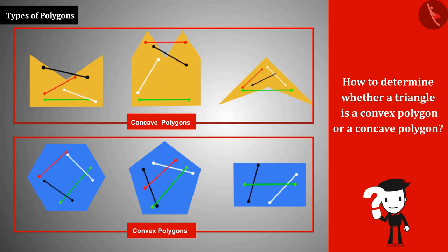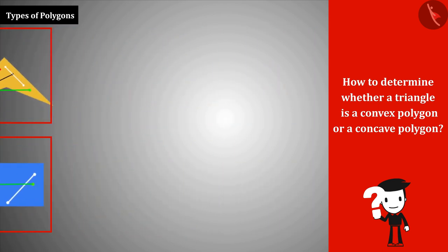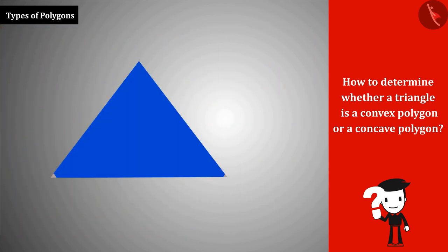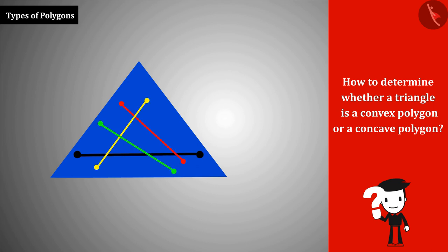You can see that all such line segments in convex polygons are completely located in the interior of the polygon. On the other hand, this is not the case with concave polygons. Similarly, the line segments connecting any two random points in the interior of a triangle are perfectly located in the interior of the triangle.